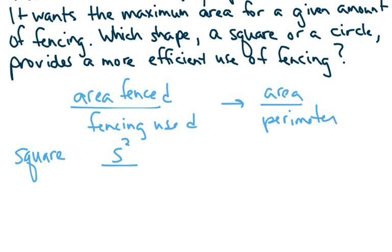And the perimeter, since all the sides have the same length S, you add S plus S plus S plus S. It's 4S.